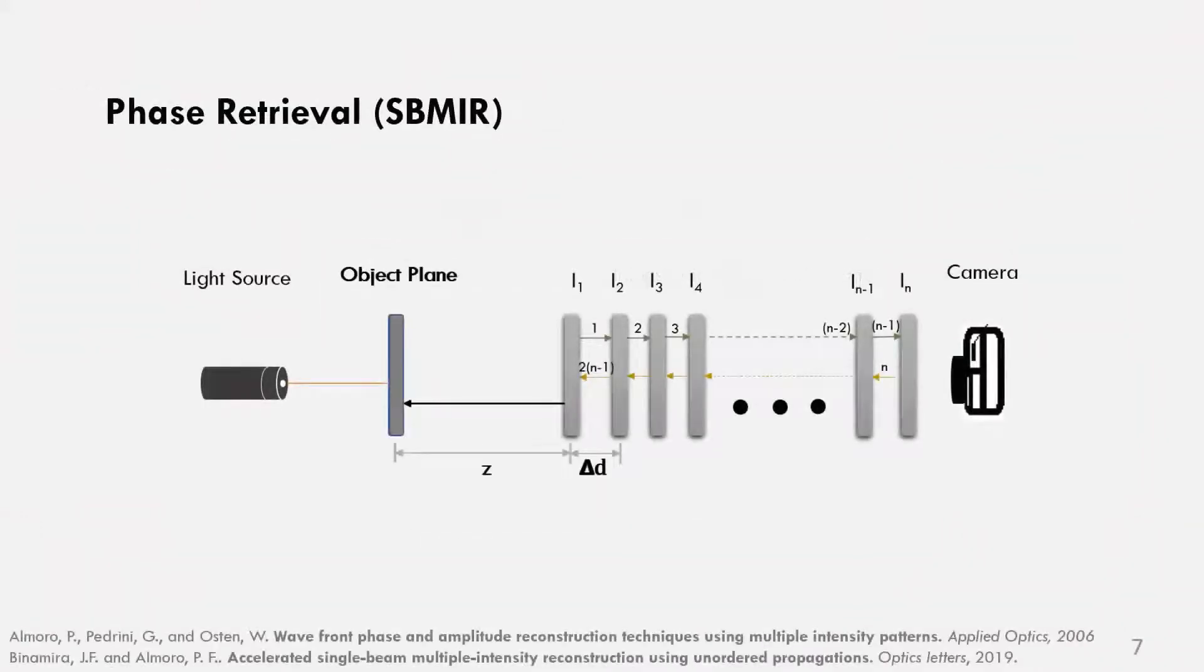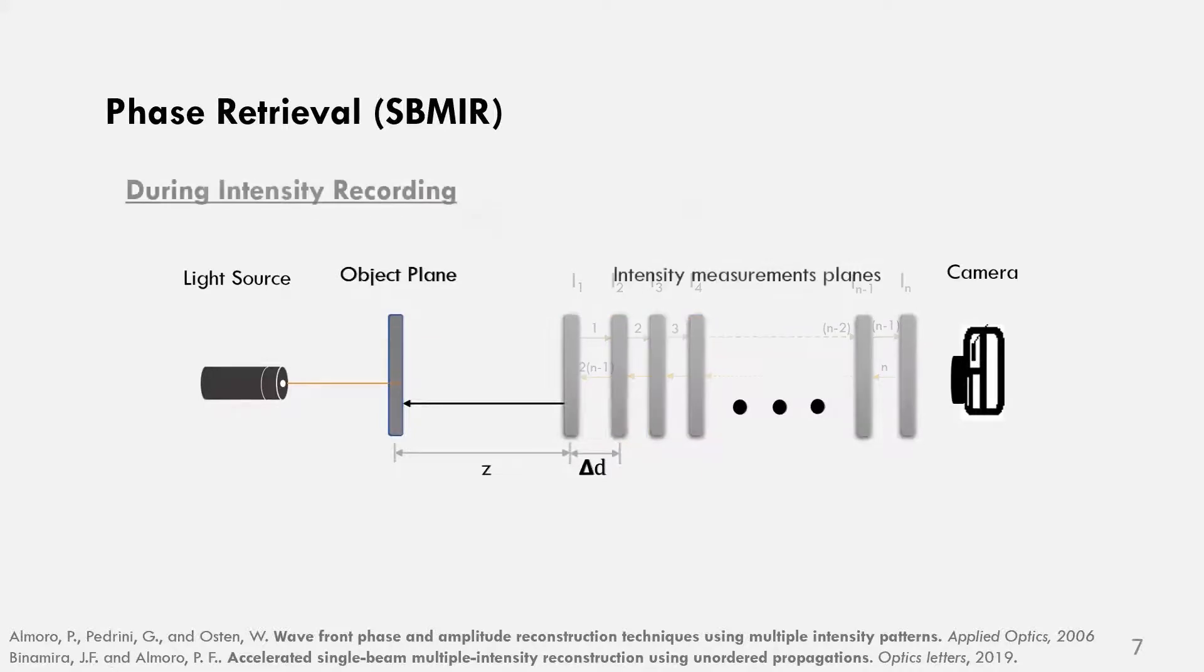A solution proposed to the phase imaging of objects is the single beam multiple intensity reconstruction or SBMIR. Using only intensity measurements and utilizing the forward and backward propagation numerically, we can reconstruct the phase for a complete object reconstruction.